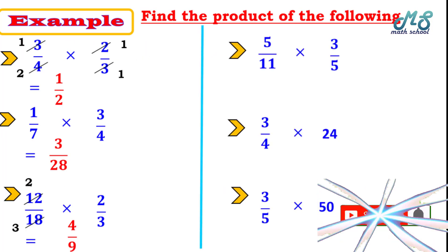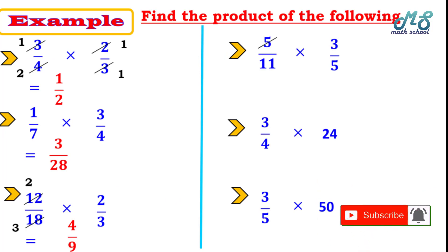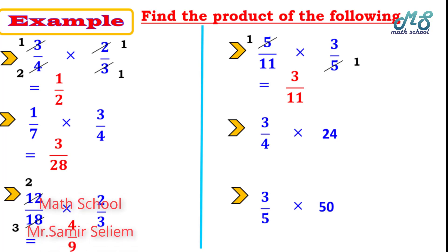Next: 5 over 11 times 3 over 5. The 5s cancel — 5 divided by 5 equals 1 both top and bottom. So we get 1 times 3 over 11 times 1, which equals 3 over 11 in simplest form.